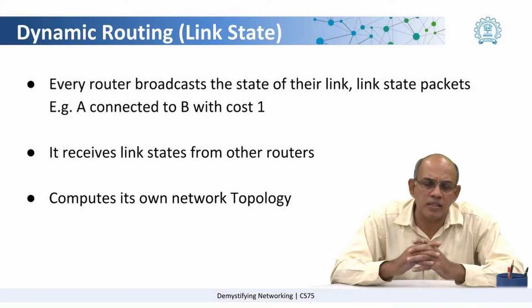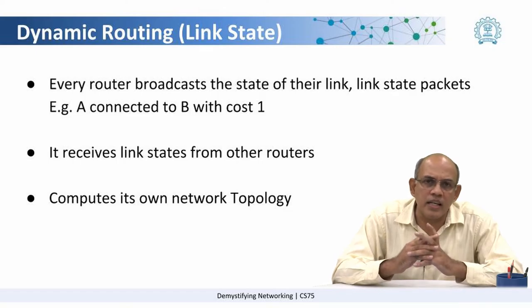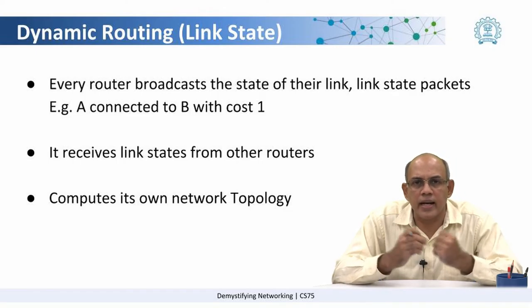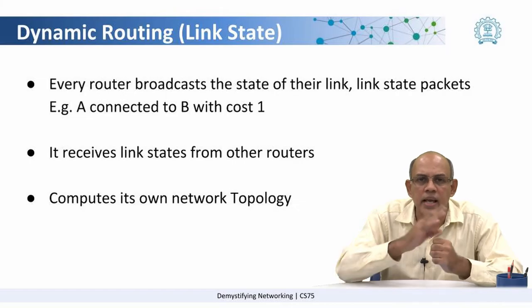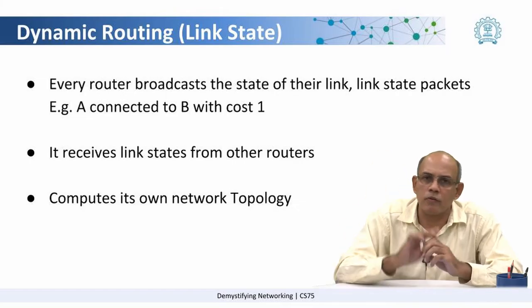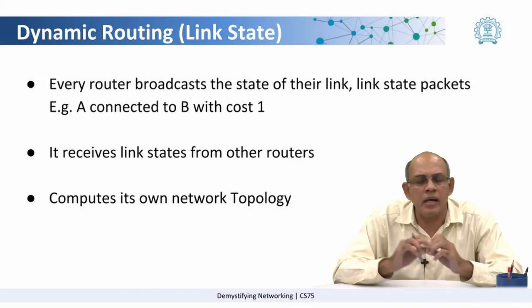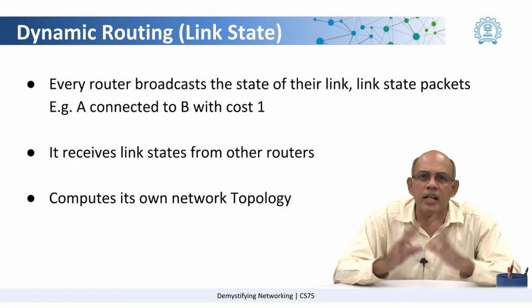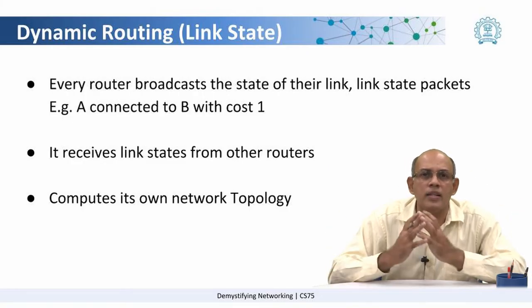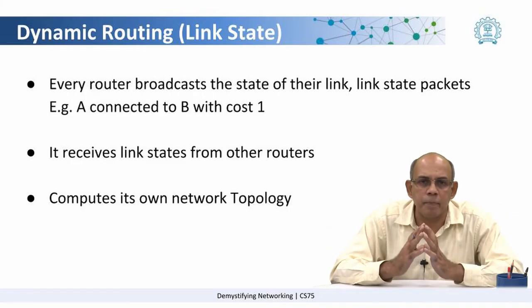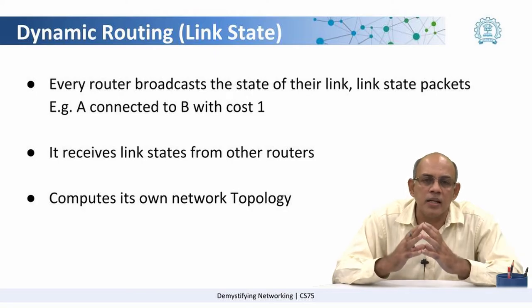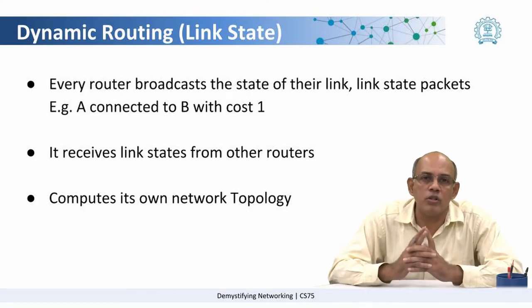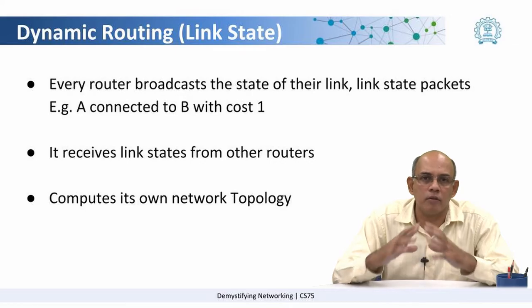As a result of this, every router receives packets saying that A is connected to B with a link cost of something, and X is connected to Y with a link cost of something else, and so on. The router receives all these packets and is now able to construct the topology of the network for itself.